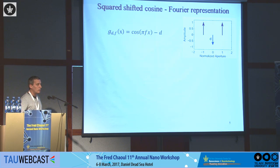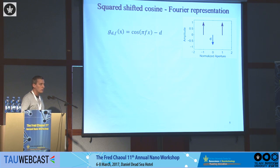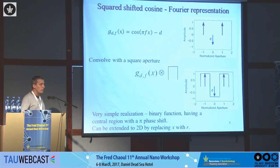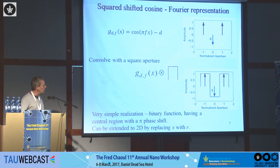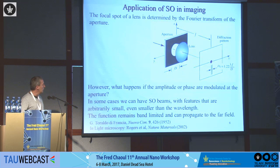Let's see how it works in the Fourier representation. A cosine minus some offset is just two delta functions minus an offset. Usually we don't like to work with delta functions in experiments, so we convolve with a rect window. That's all we need: if we have something positive, then negative, then positive again, and we do the Fourier transform, we get a super-oscillating function. It's very simple. And then there are many applications.